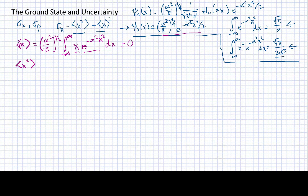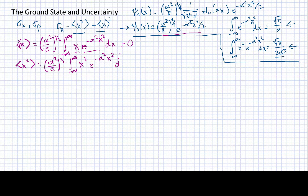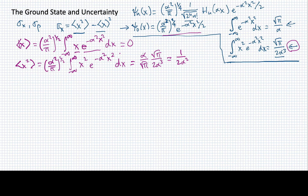When I do the same for the expectation value of x squared, it's essentially the same integral except I'm going to have x squared in the integrand. One can look this up in integral tables, and it's simply going to give us square root of pi divided by 2 alpha cubed, which means that my overall result will be 1 over 2 alpha squared. Since the expectation value of the position was zero, the variance squared in the position must be equal to 1 over 2 alpha squared.